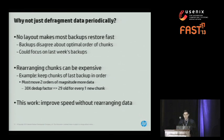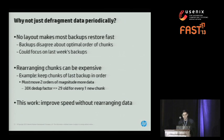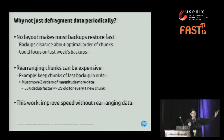For example, suppose we wanted to keep the chunks of the last backup in order. It turns out this means we have to move two orders of magnitude more data. If we had a 30x dedup factor, there are 29 old chunks on average for every one new chunk. So instead of writing a couple new chunks, we have to write the new chunks and 29x more old chunks. That's a lot more data to move. For this work, we concentrated on improving the restore speed without rearranging data.